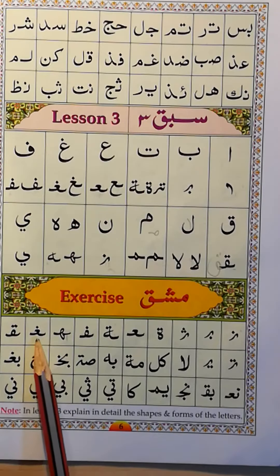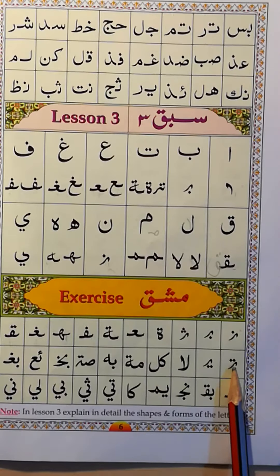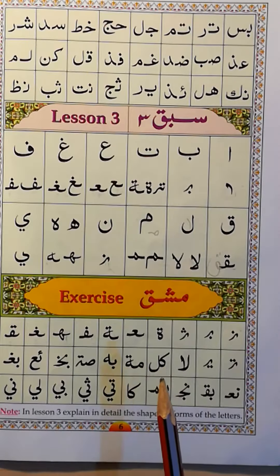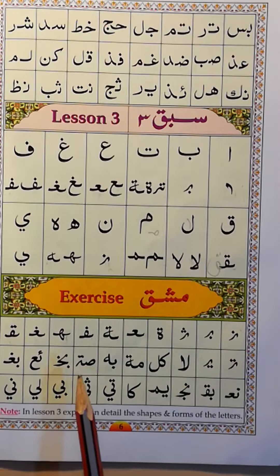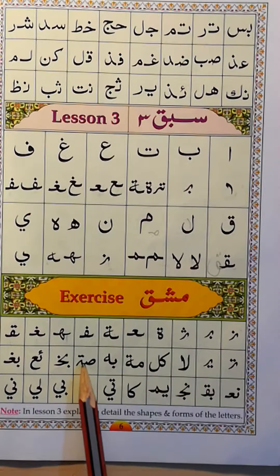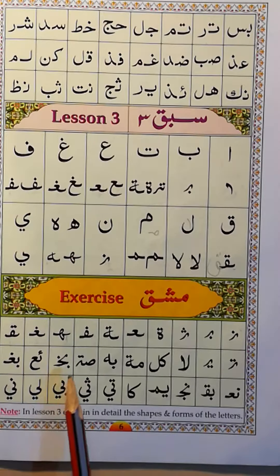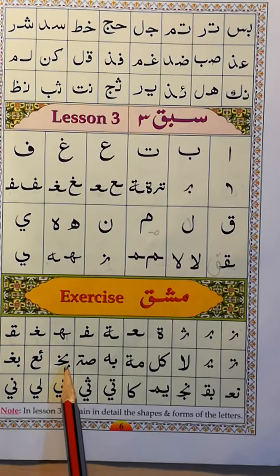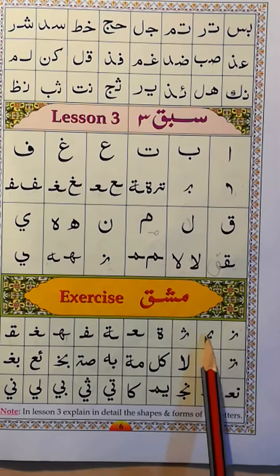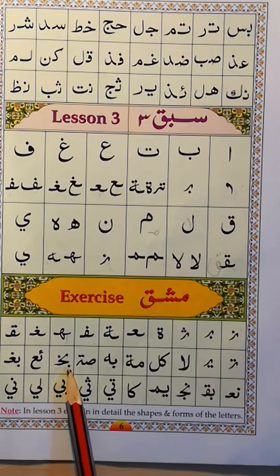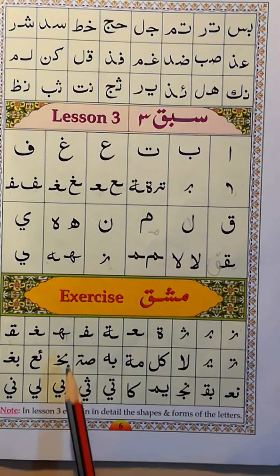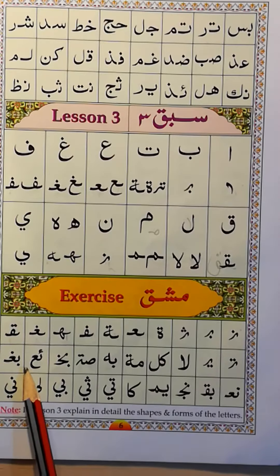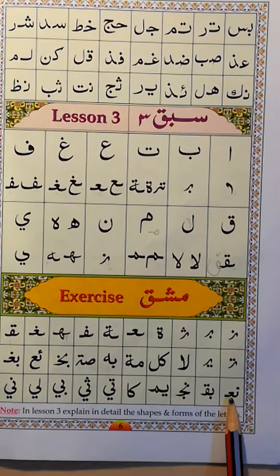Fa, ha, ghayn, qaf, ta, ya. Lam-alif, alif, lam. Mim, ta, ba, ha. Ta — how do you know it is ta? Because there are two dots on the top. Then ba, khaw. How do you know this is ba? Because we know this shape — one dot on the bottom. And khaw — we know how it looks, with one dot on the top. So ba, khaw. Hamza, ayn, ba, ghayn, noon, noon, ayn, ba, qaf, noon.